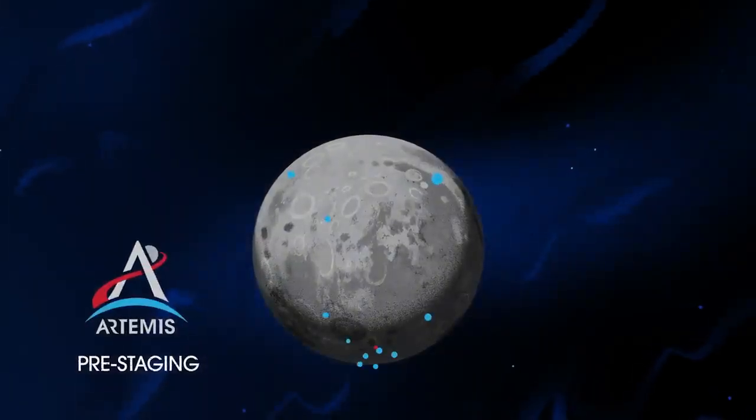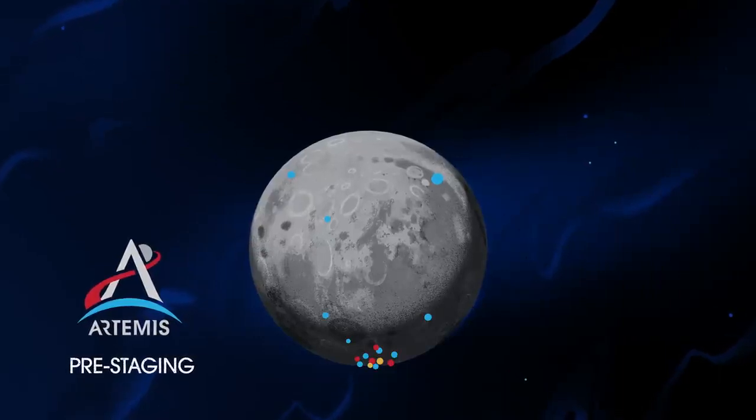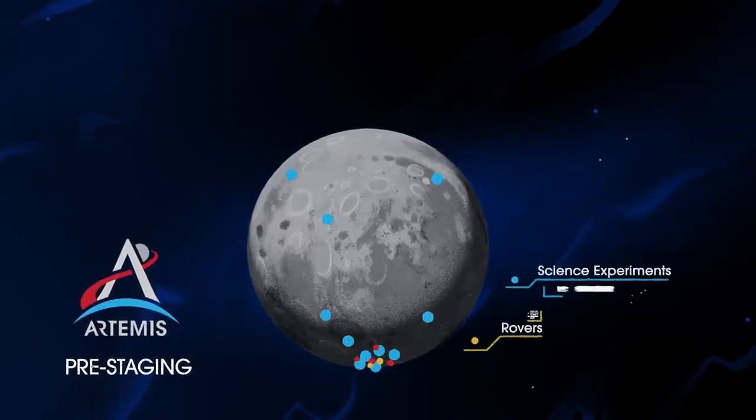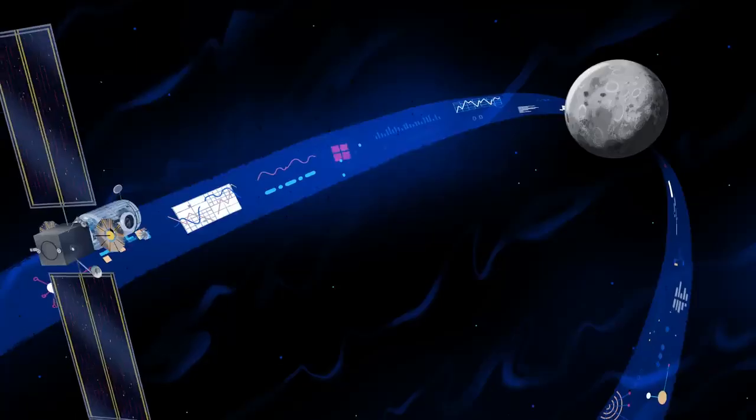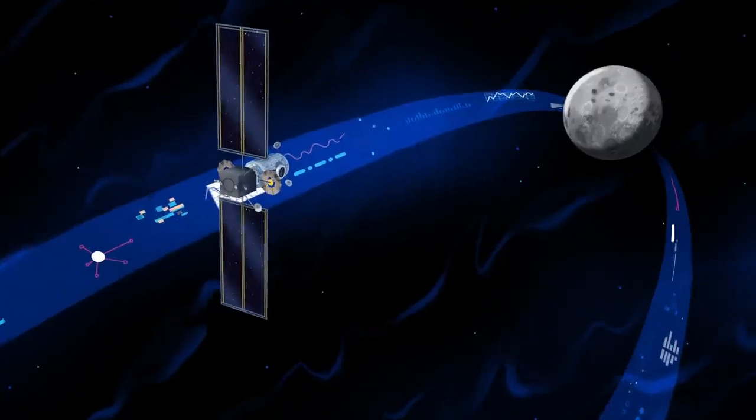Everything needed for lunar missions will be positioned in advance by commercial and international partners. This includes rovers, science experiments, and human-rated systems on the surface, but it also includes a dedicated lunar station in orbit around the Moon called Gateway.